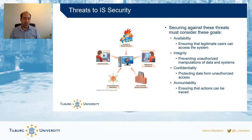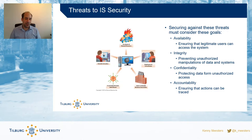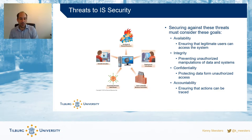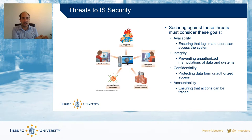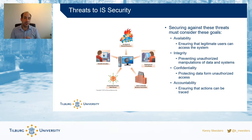One way to ensure integrity is auditing and making sure there's no unauthorized access. Then there's confidentiality — making sure that data does not get accessed by unauthorized people or other systems. With integrity you're making sure the data itself is consistent and not manipulated, while with confidentiality you're making sure the data does not get taken out of the systems or end up somewhere it's not supposed to be.